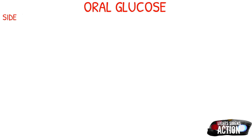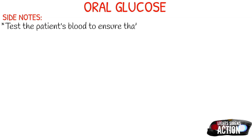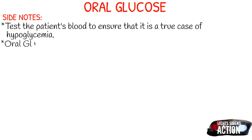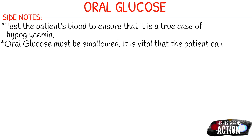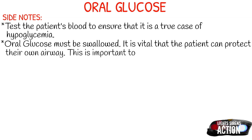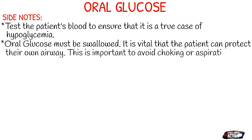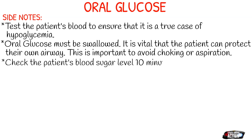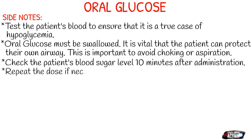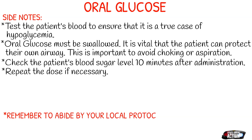A few side notes about oral glucose. You always want to test the patient's blood to ensure this is a true case of hypoglycemia — get out your glucometer and test their blood sugar levels, because there's no point in giving oral glucose if that's not the issue. Oral glucose must be swallowed, so it's vital that the patient can protect their own airway to avoid aspiration and choking. Check the patient's blood sugar 10 minutes after administration, assess their level of consciousness and overall affect, and decide whether to repeat the dose.